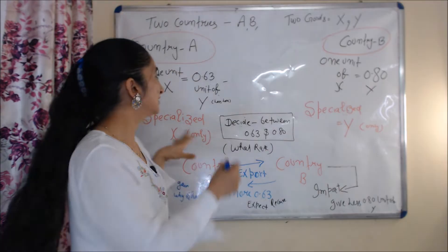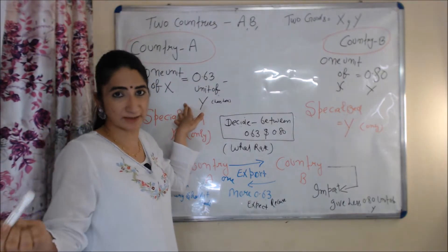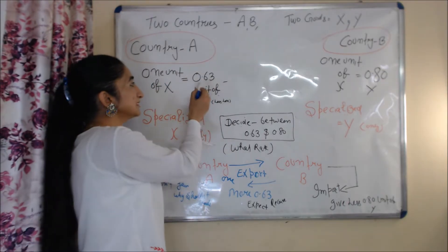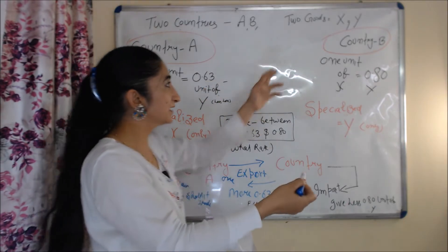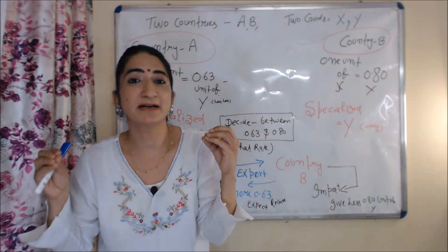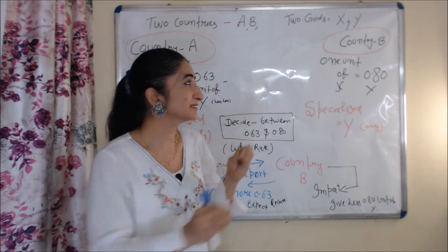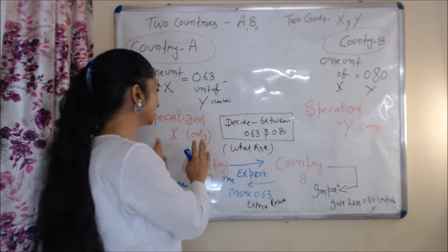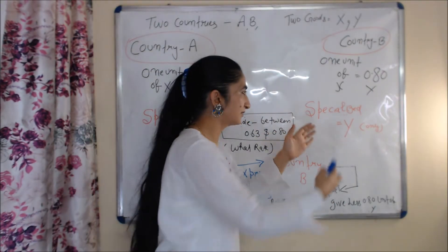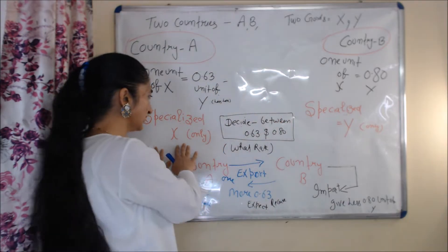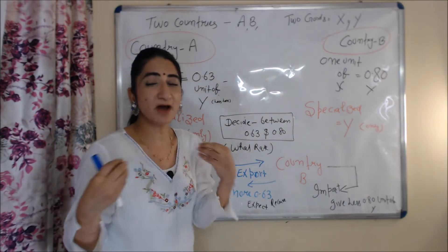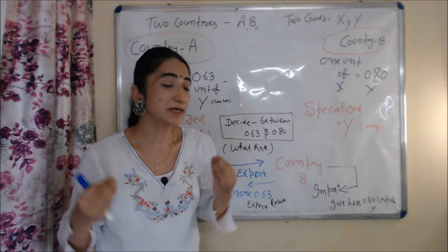Country A has less loss in production of X, because when country A produces one unit of X, it gives up only 0.63 units of Y, whereas country B gives up 0.80 units of Y. That's why country A decided to specialize in good X, and country B will specialize in good Y. Country A will produce only X, and country B will specialize only in Y.